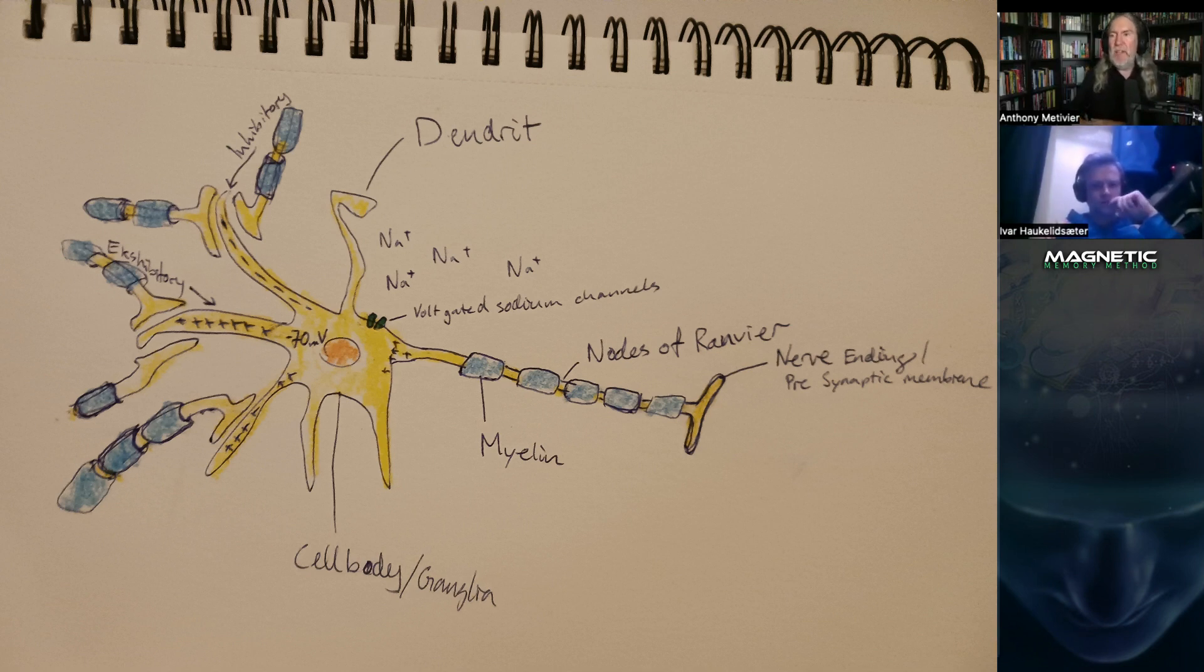I actually draw these after I have memorized. I see how much I understand of my own mnemonics. So I memorize and then try to draw it out, doing it in the opposite order. Mnemonics are almost always bi-directional. You can do it both ways.